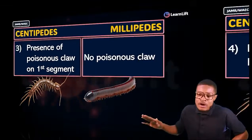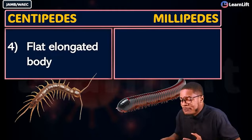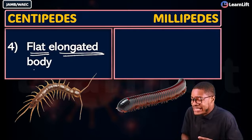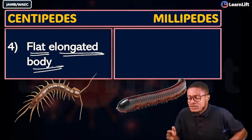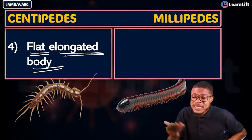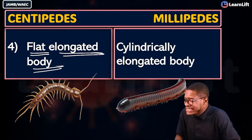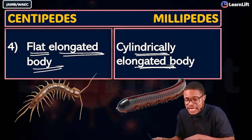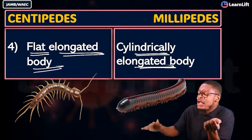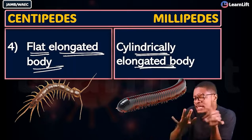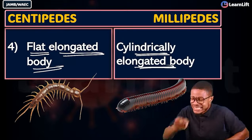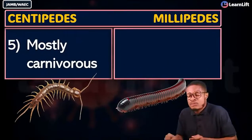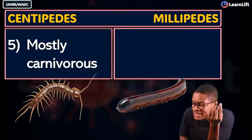Centipedes have a flattened, elongated body — they are described as dorsoventrally flattened. Millipedes, however, are cylindrical and elongated. So both are elongated, but centipedes are dorsoventrally flattened while millipedes are cylindrical.